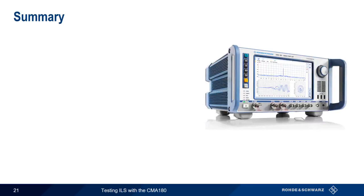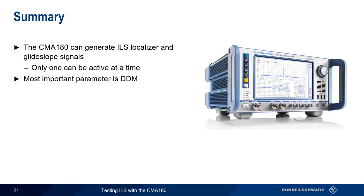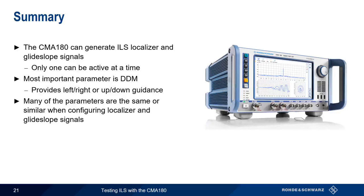Let's summarize the main points regarding ILS signal generation. The Rohde & Schwarz CMA-180 radio test set can be used to generate both ILS localizer and glide slope signals; however, only one of these modulation types can be active at a time. The most important parameter when configuring localizer and glide slope is DDM, or difference in depth of modulation, which provides the left-right or up-down guidance to the pilot. Remember that many of the parameters used in localizer and glide slope configuration are often the same or very similar in meaning and function. This concludes our presentation, Testing ILS with a CMA-180. Thanks for watching.